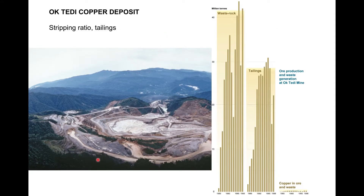At the Oktedi mine in Papua New Guinea, an earthquake caused liquefaction and the failure of a tailings dam before mining practices commenced. The company was then able to dump tailings directly into local river systems, causing a horrific environmental impact. The histograms show the waste rock (overburden), tailings left over after froth flotation, and the amount of copper extracted—all as a function of time—to give a sense of the various parts of the waste stream.